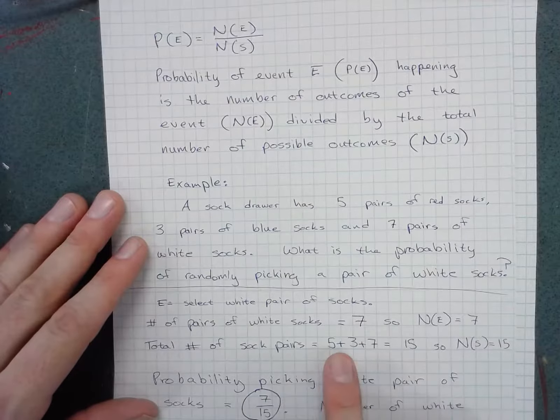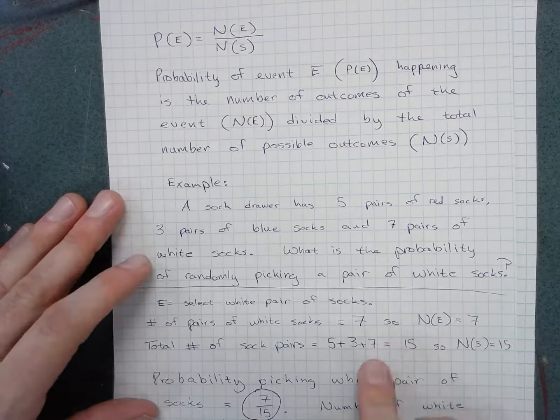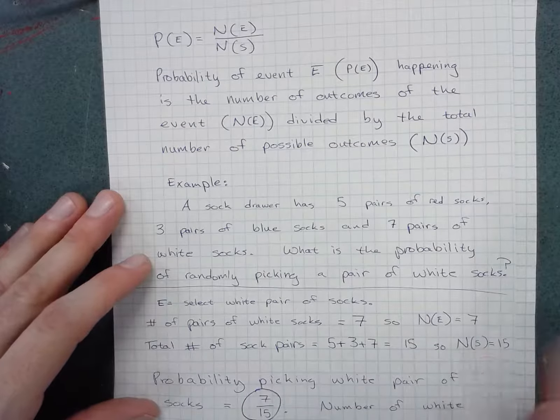There are 15 pairs altogether with the five red, three blue, and seven white, 15 pairs altogether.